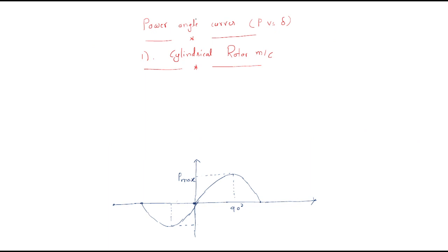The next topic is power angle curves, which represent the relationship between power and load angle. Power angle curves are of two types because synchronous machines are of two types: the cylindrical rotor machine and the salient pole rotor machine. For the cylindrical rotor machine, the active power value is P = EV/Xs × sin(δ).